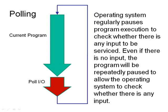Polling works like this: a program runs on the CPU for some period, then pauses to check — is there any input? If so, it deals with it and carries on. Even when there is no input, the program keeps pausing just to check whether or not there is input for it.